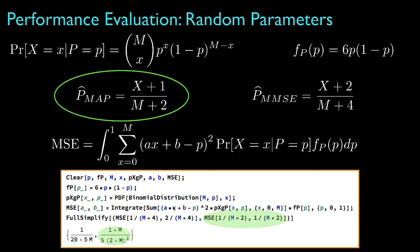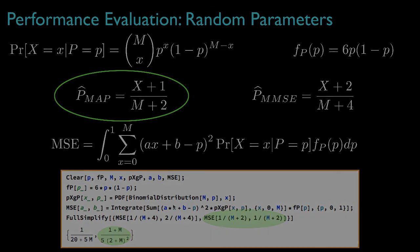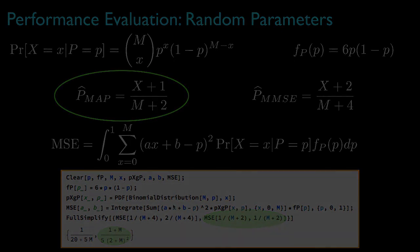Whereas we often prefer smaller mean square error, in some applications we'll use the MAP estimator and its larger mean square error because we cannot derive an analytic expression — as we've been able to do here — for the minimum mean square error estimator.